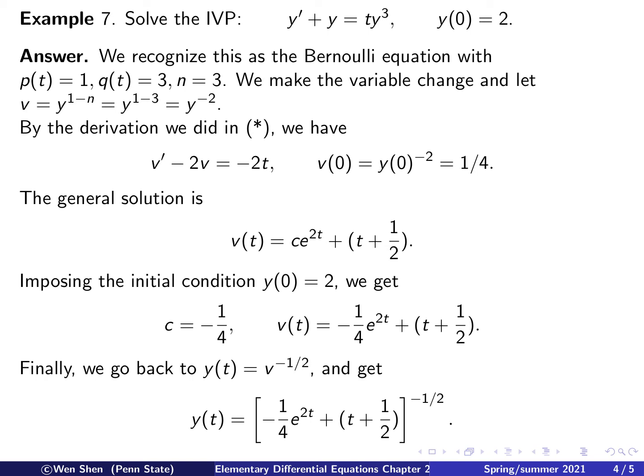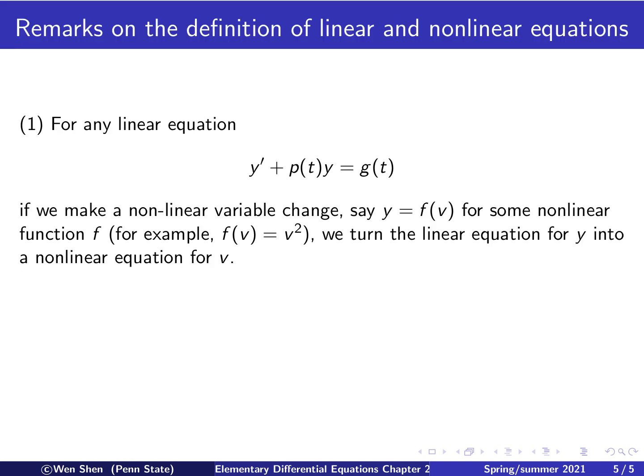And then finally, we need to go back to the y, because that is our unknown. And then we use the inverse relation. y would be v to the power negative one-half. And then we can write out. y(t) is what's in this bracket, is the v we computed here, to the power negative one-half.